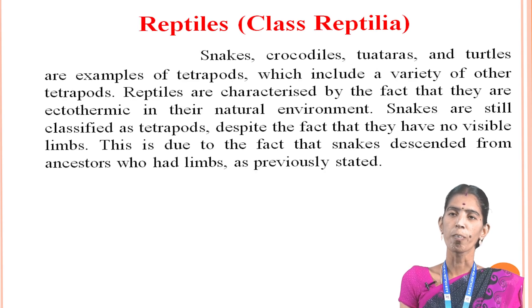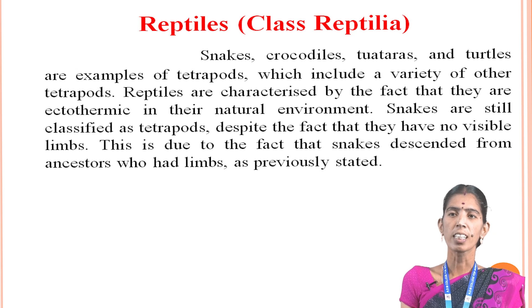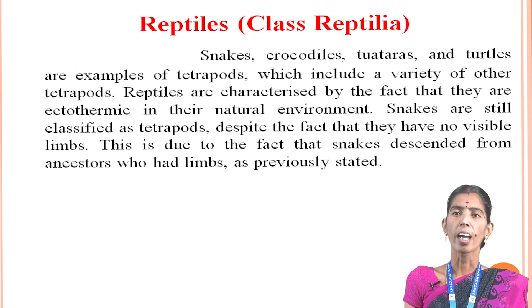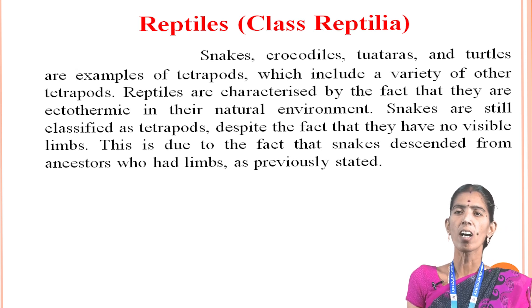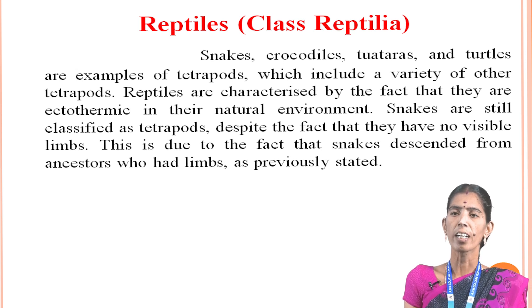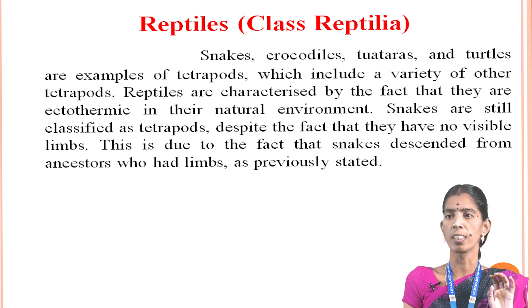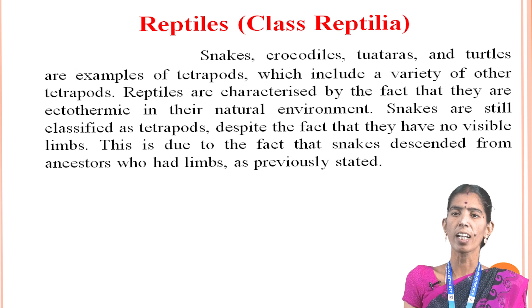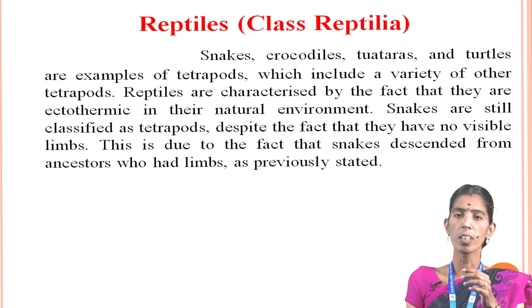Then reptiles, class Reptilia. For example, snakes, crocodiles, tortoises and turtles are examples of tetrapods, which include a variety of tetrapods. Reptiles are characterized by the fact that they are ectothermic in their natural environment. Snakes are still classified as tetrapods despite the fact that they have no visible limbs.